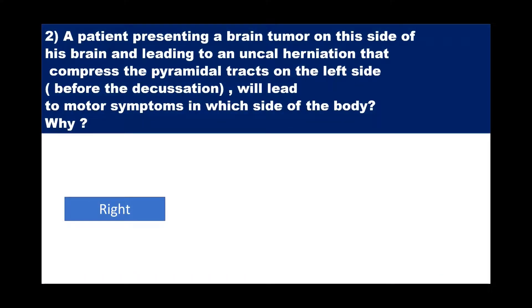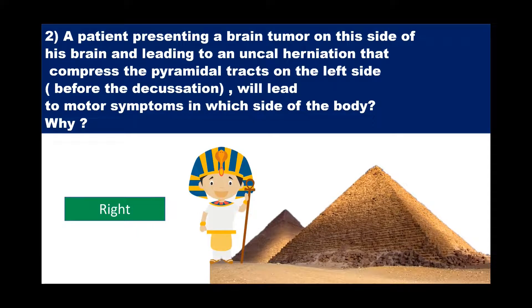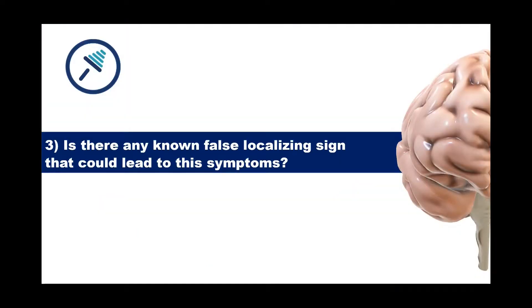Now we can answer our question. A lesion on the left side will lead to symptoms on the right side because of the decussation of the fibers, the pyramidal decussation.